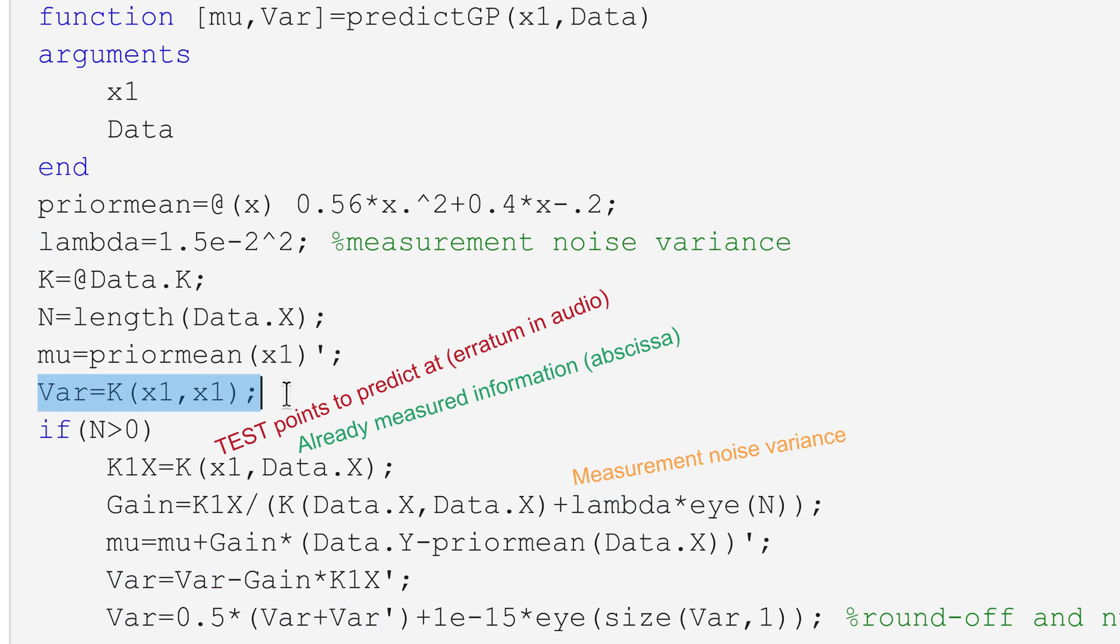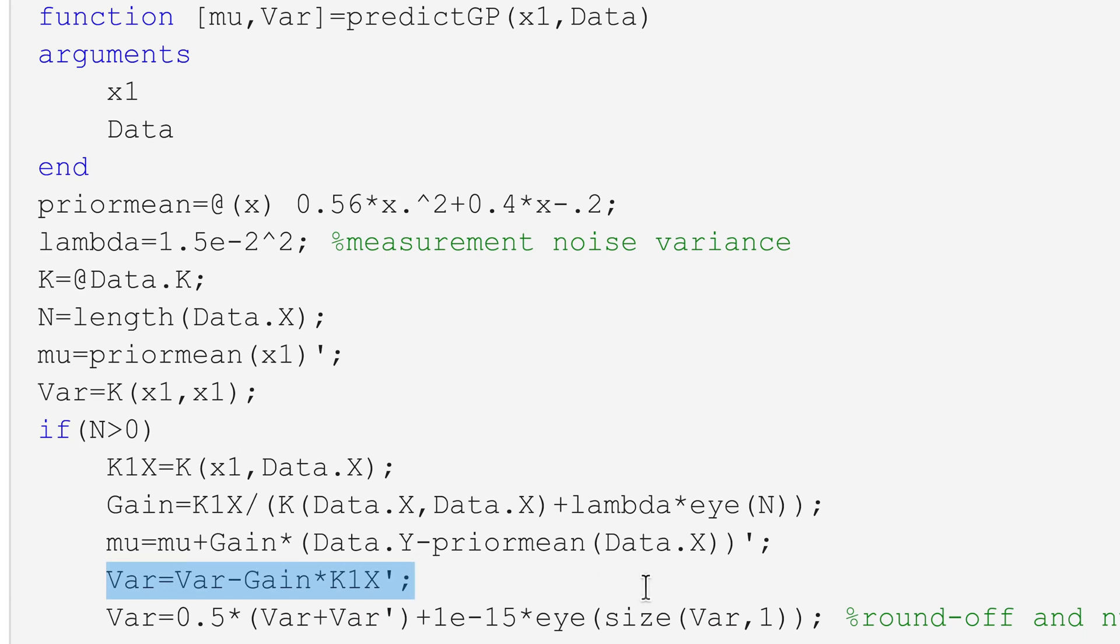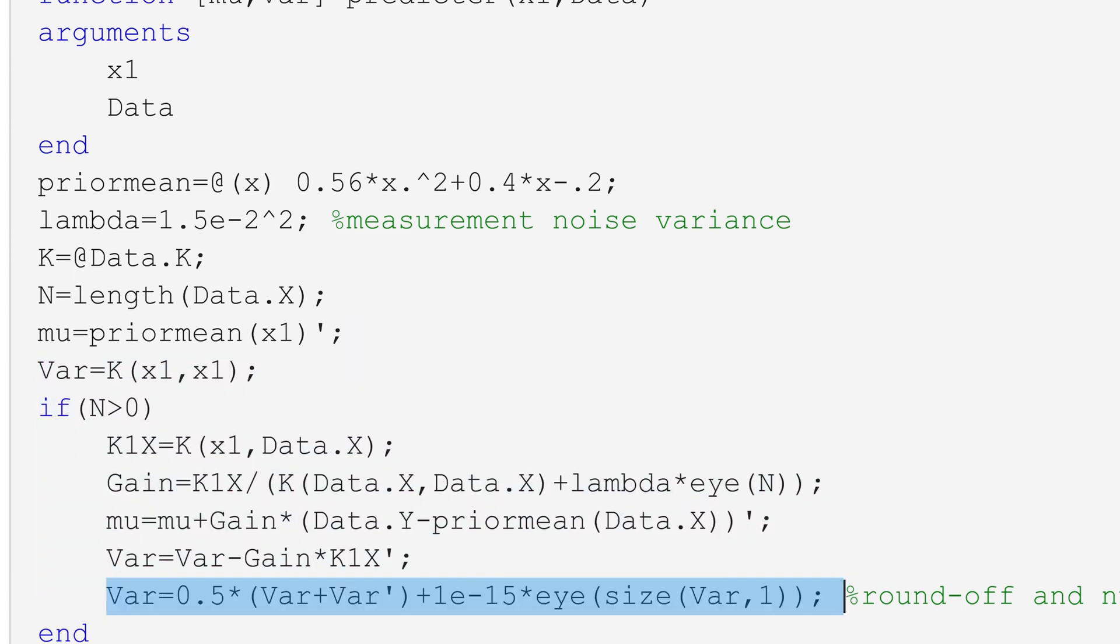My prediction will be driven by the innovation, the difference between what I observe, data dot y, and the mean prediction, this prior mean function evaluated at my x points, and then that innovation will be multiplied by an observer gain, let's say, that will compute the increments with respect to the prior mean of the posterior estimation. That gain is covariance between measurements and information, data dot x are the measurements, divided or multiplied by the inverse covariance matrix of the information.